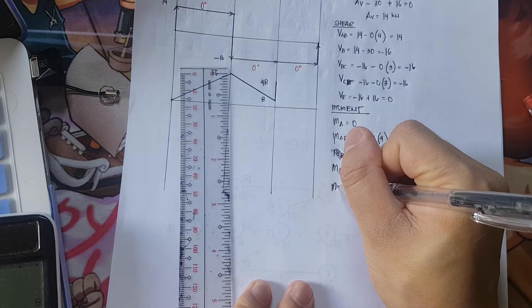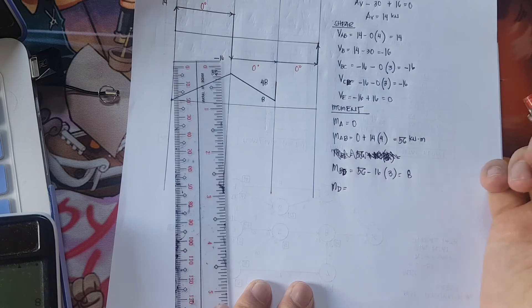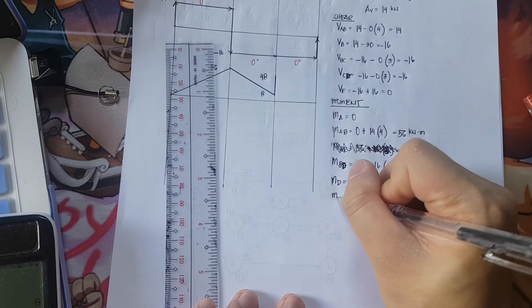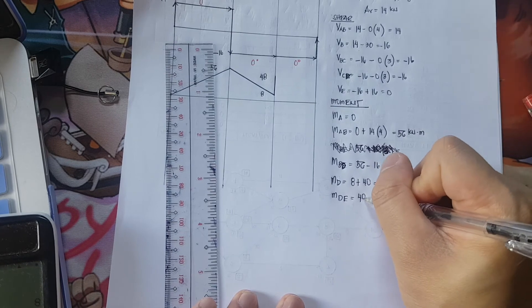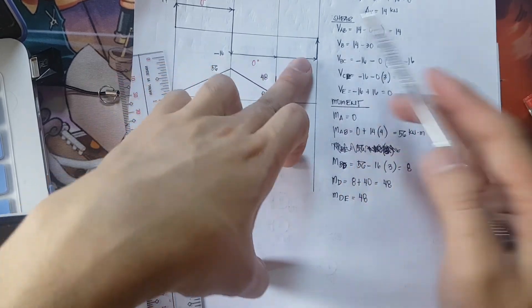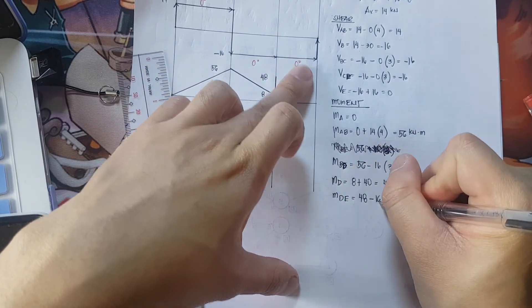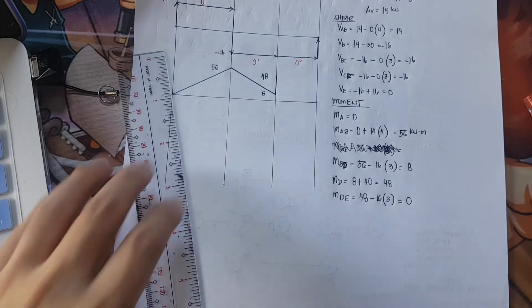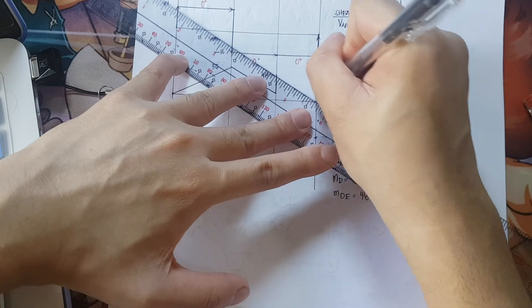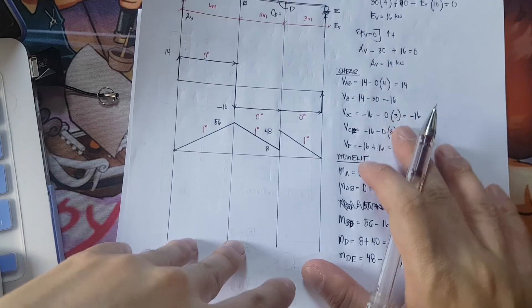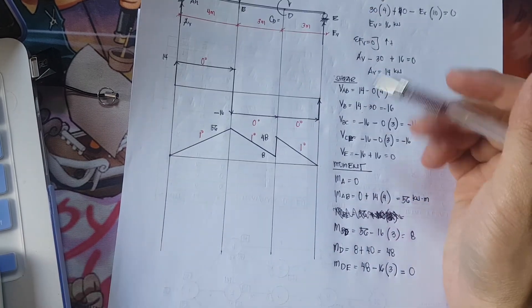M_D equals 8 plus 40 equals 48. Moment D to E: shear is below the axis so it's negative 16 times a distance of 3, giving 48 minus 48 equals 0. Connecting these points gives straight lines — first degree throughout. This completes our shear diagram and moment diagram.